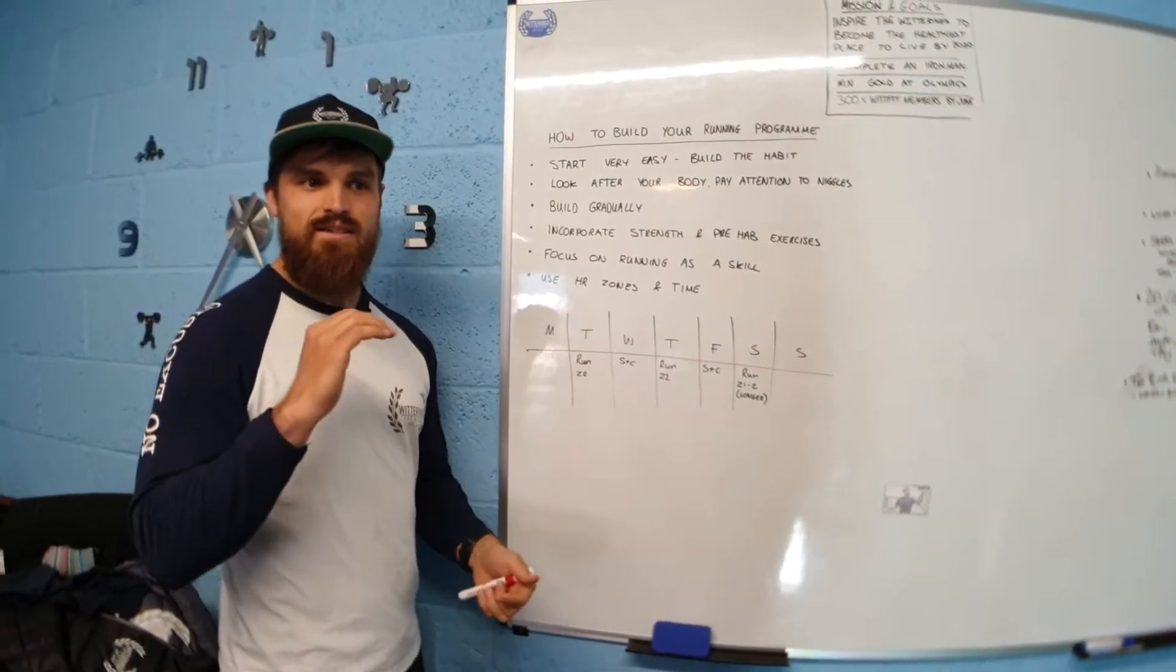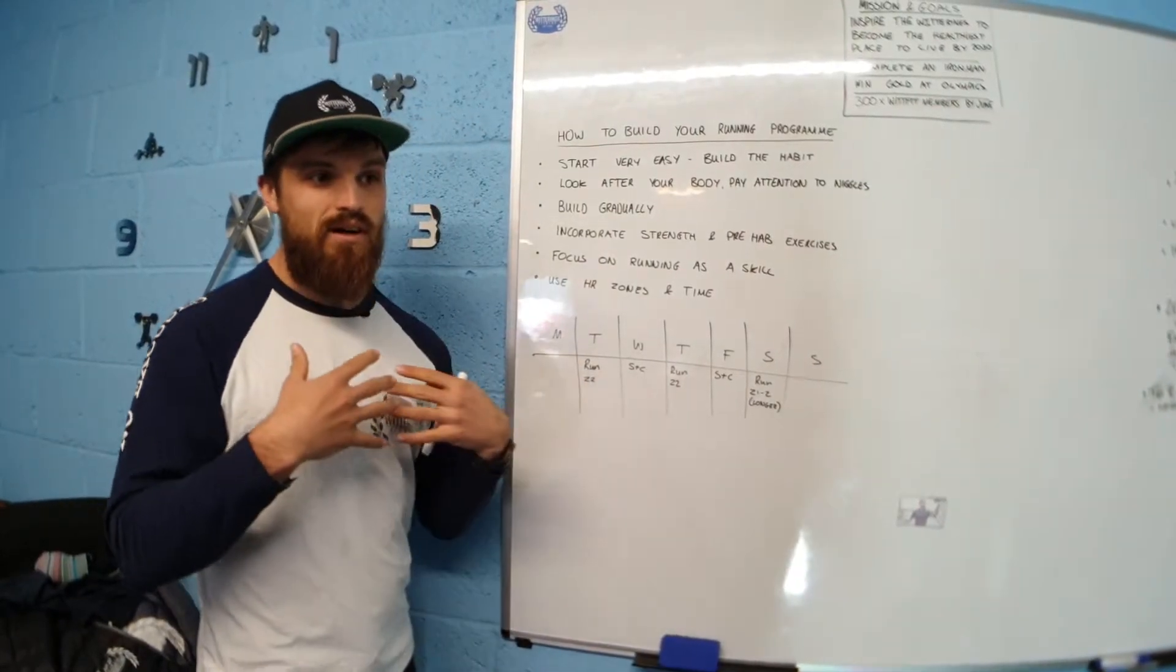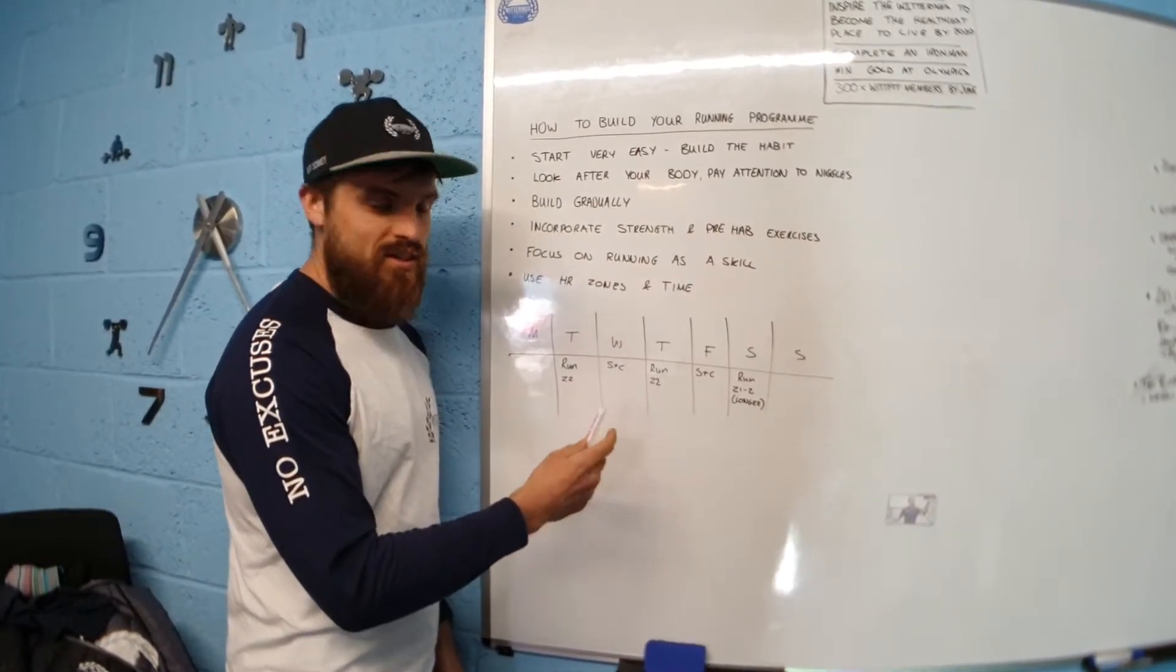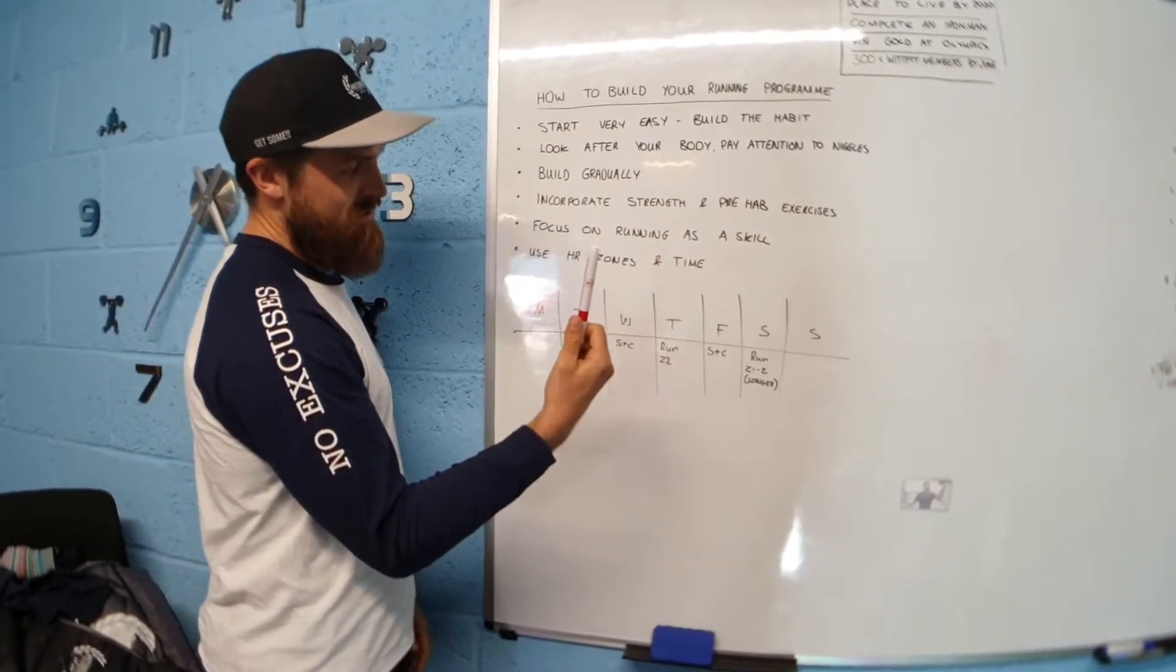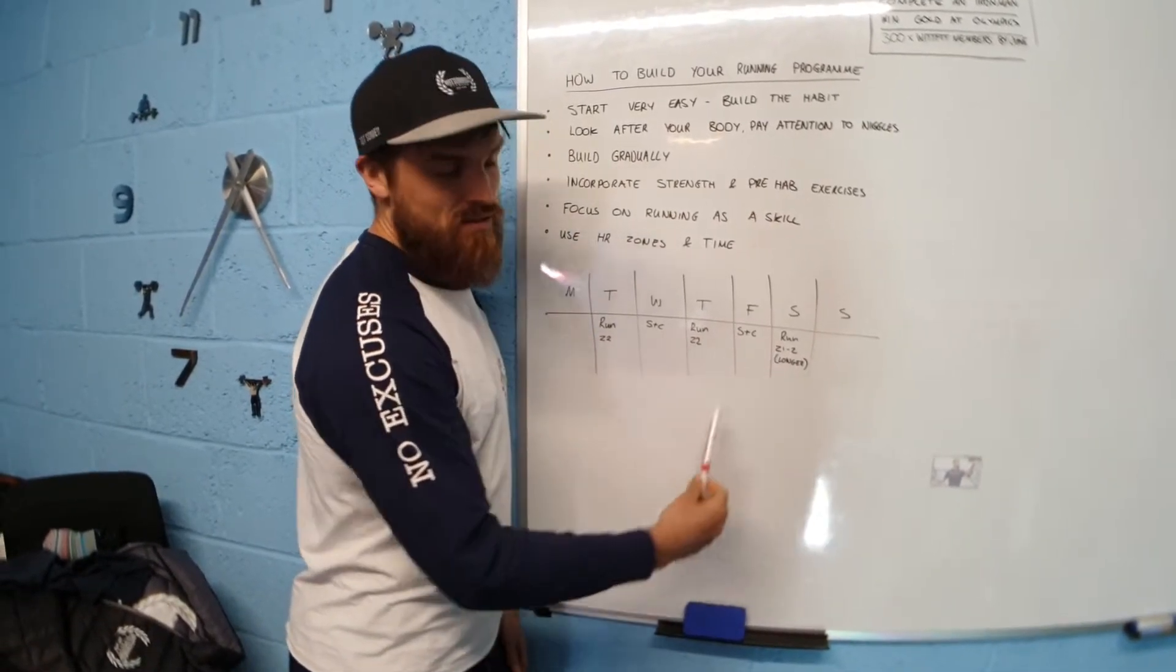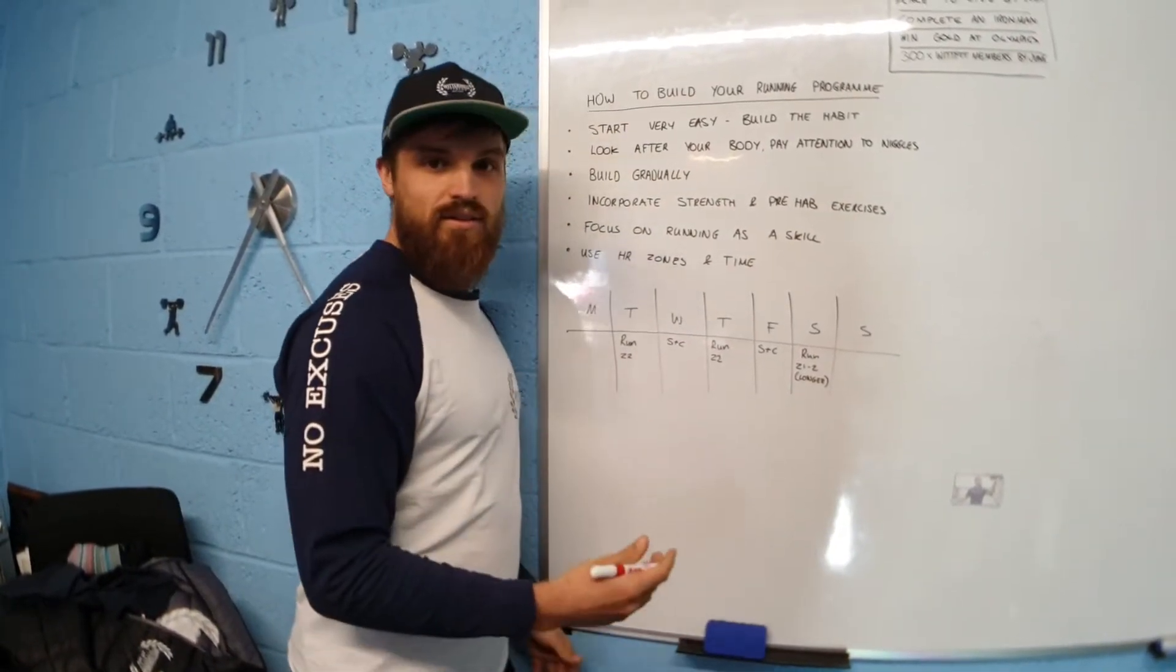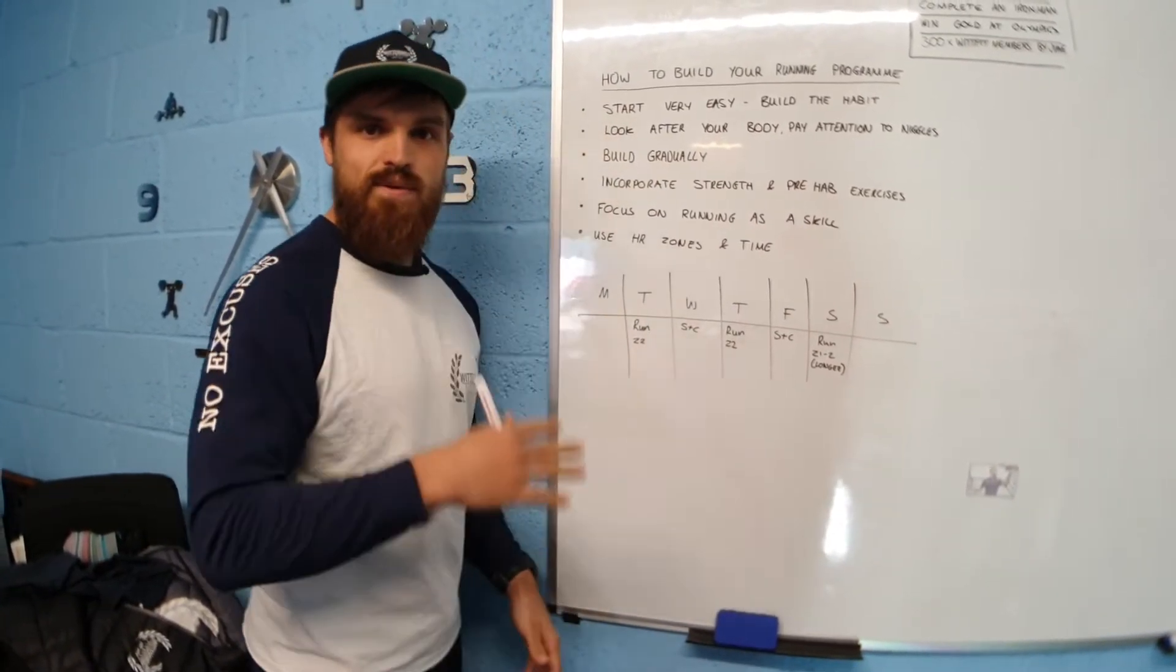Zone two is a nice steady state endurance heart rate for you to be in. I've added in some strength and conditioning, so on Wednesday do some strength and conditioning. Don't want to be just running all week. Back to running on Thursday. Strength and conditioning again, and then running on Saturday. You could go for slightly longer. If you wanted to add another stretching or strength and conditioning, you can add that in there. This one is zone one to two, so zone one is a little bit easier. You're taking it a bit of an easier run on Saturday.